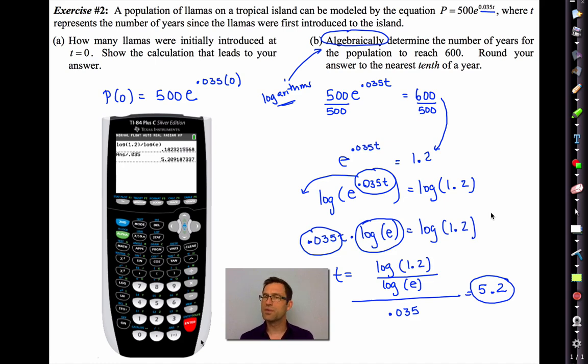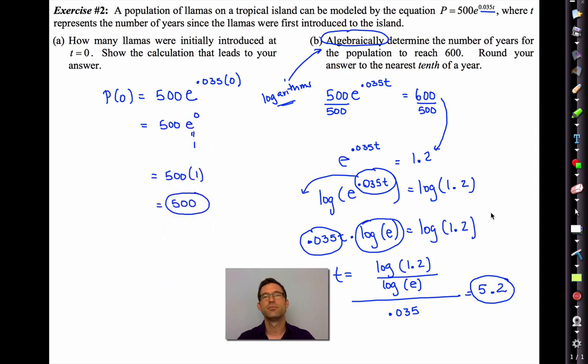So we're going to use e a lot more. Don't worry about it. All you need to know about e right now is that it's a number that's just slightly less than 3, and it gets used a lot in exponential modeling. I'm going to put away the TI-84 plus right now. And I'm also going to clear out the text in a moment. So pause the video if you need to.